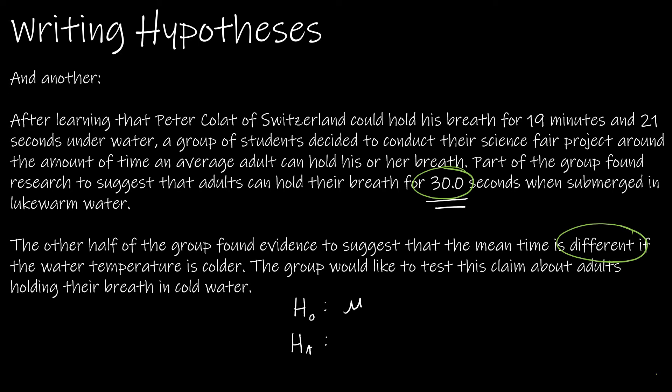The null hypothesis is always equal. Based on research, we expect adults can hold their breath for 30 seconds, so mu equals 30. You could use 0.5 for half a minute, or if measuring in seconds, stick with 30. What is the alternative hypothesis? The other half of the group found evidence to suggest the mean time is different — not less than, not greater than, but different. That means this is not equal to 30. So H sub zero: mu equals 30. H sub A: mu is not equal to 30.